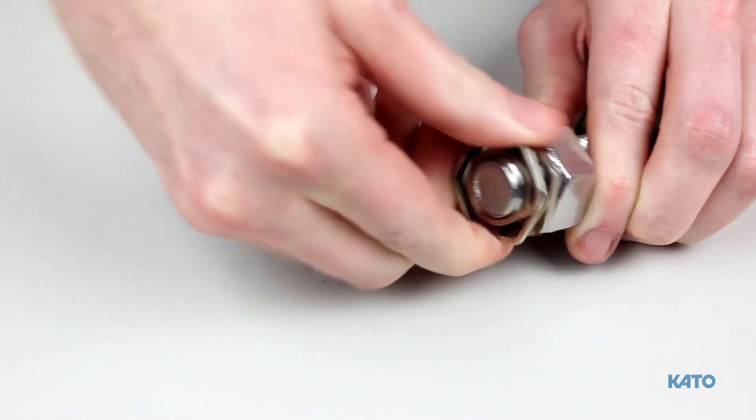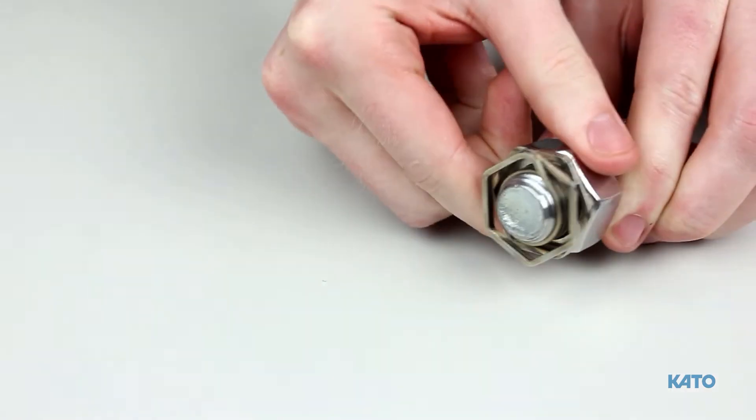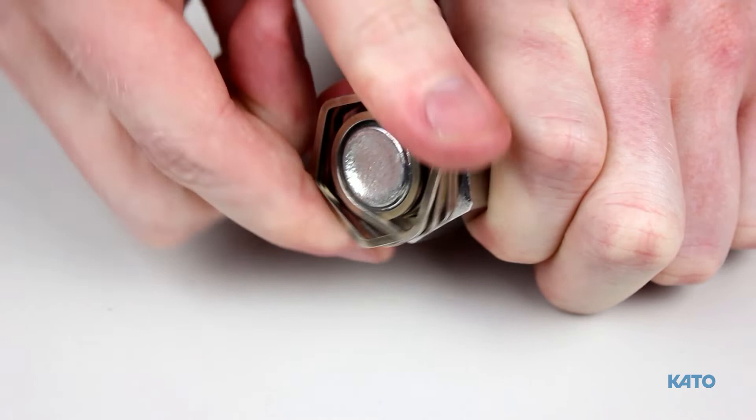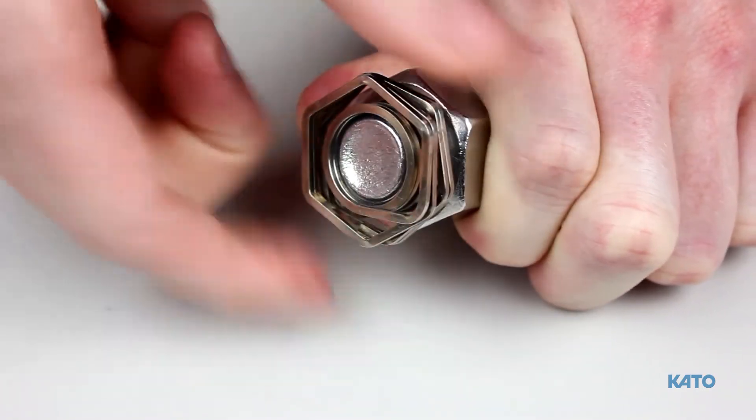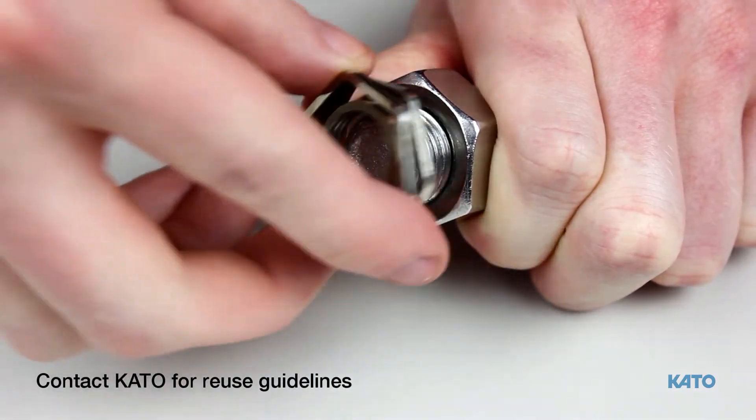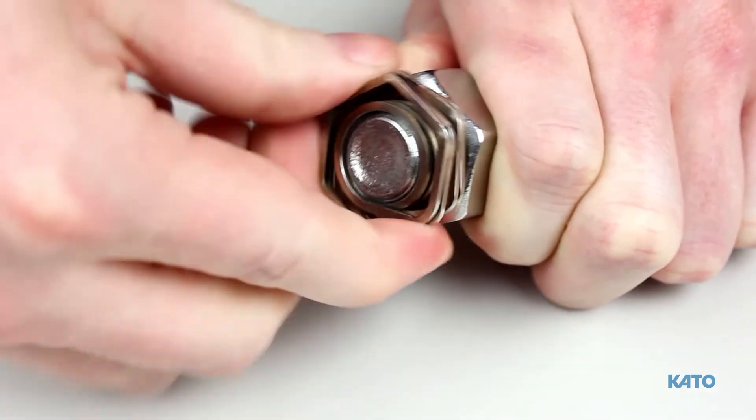Once installed, Lock One will prevent any standard nut from loosening free. Lock One can be easily removed and it is completely reusable. Lock One is made from 304 stainless steel so it is naturally corrosion resistant.